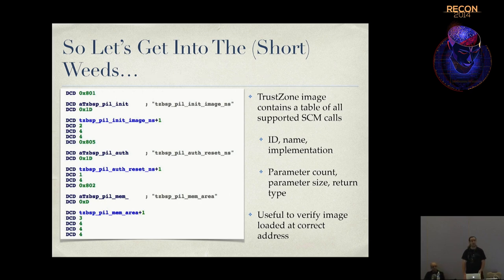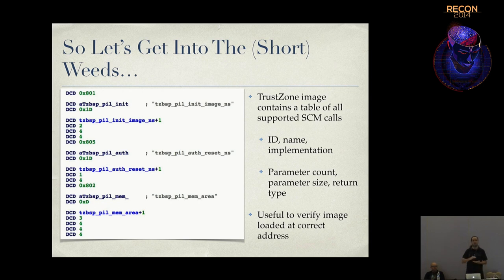Also helpful is metadata saying 'this function takes two parameters, the first is size four, the second is also size four.' Now you have a great profile of how to invoke the function and can target your fuzzer precisely. One trick when loading in IDA: this table really jumps out at you. You can find it, look for value 801, check where the pointer is pointing - it should point to the pill-init image string - and rebase by the difference if needed.